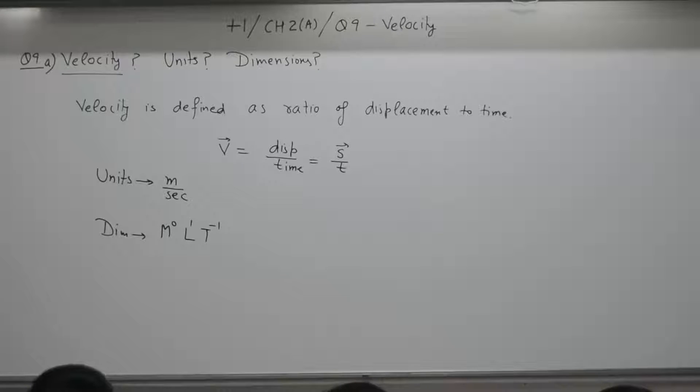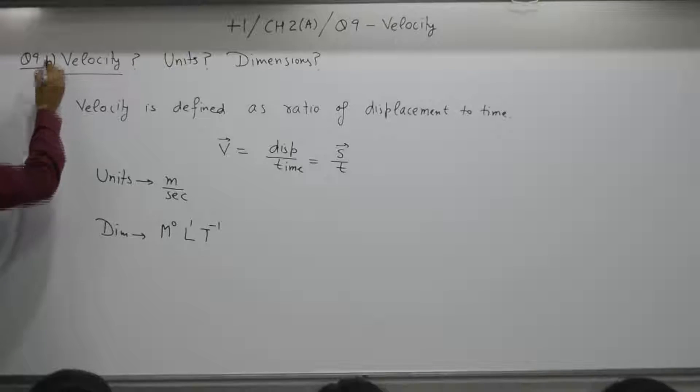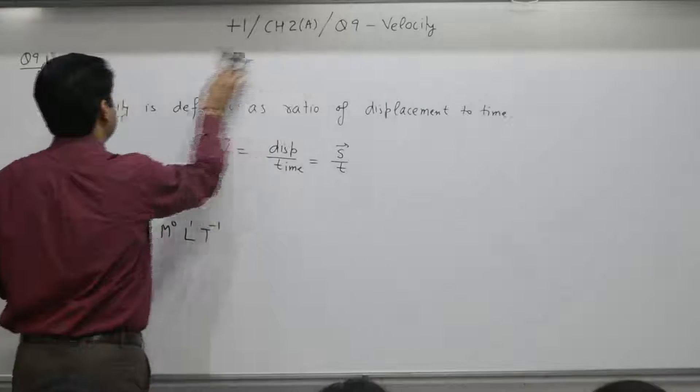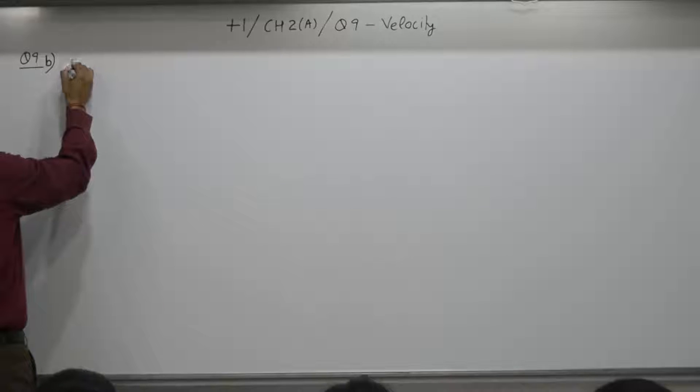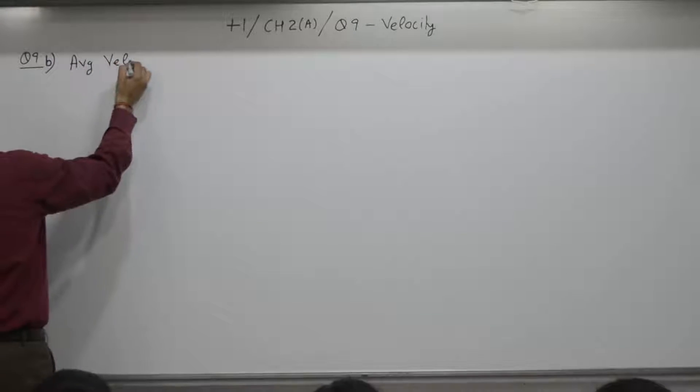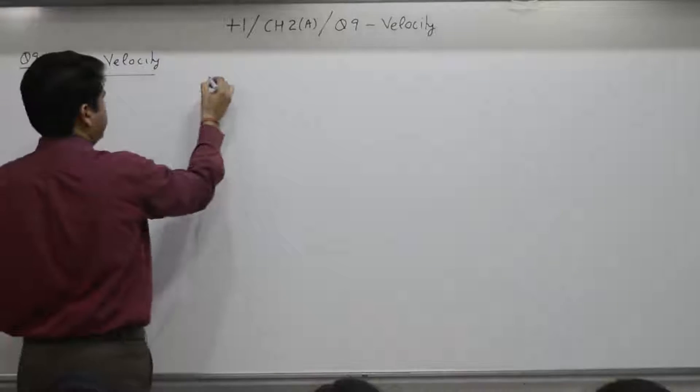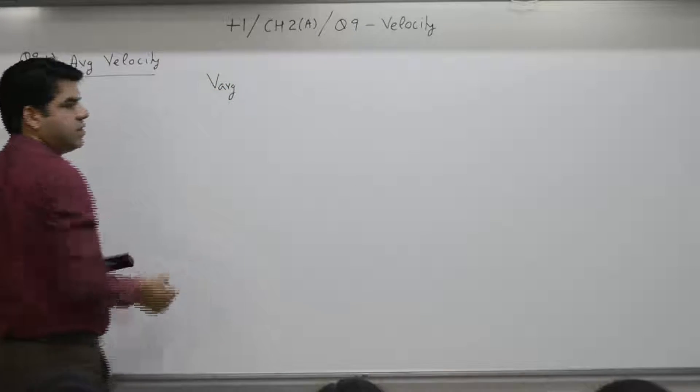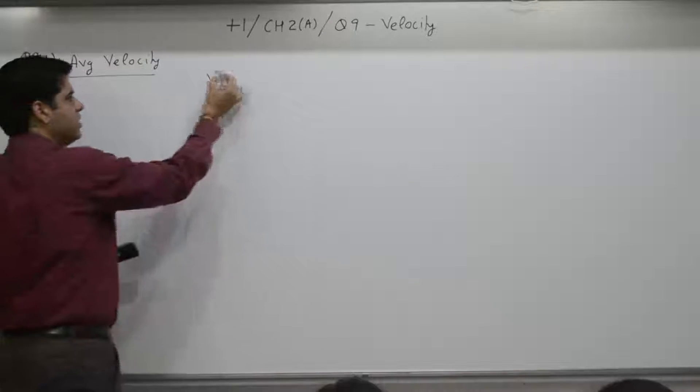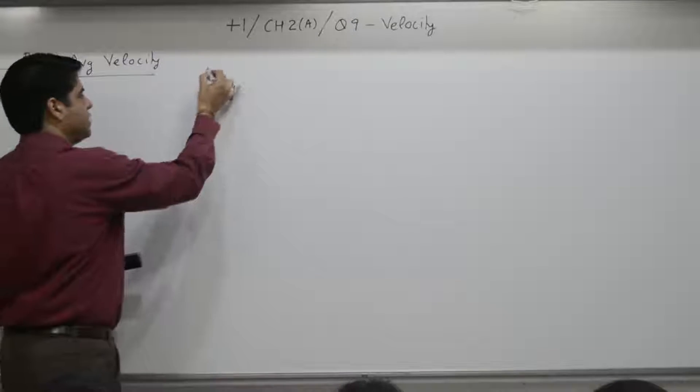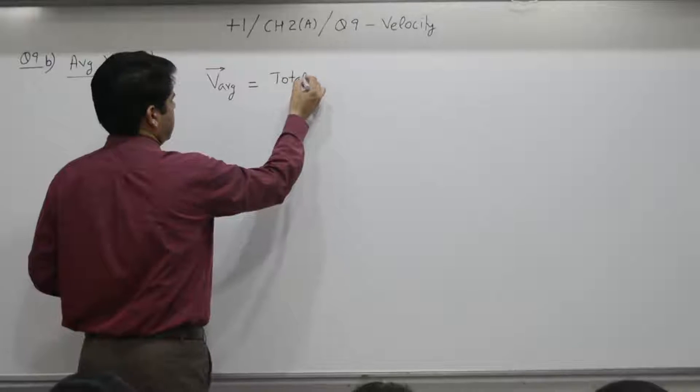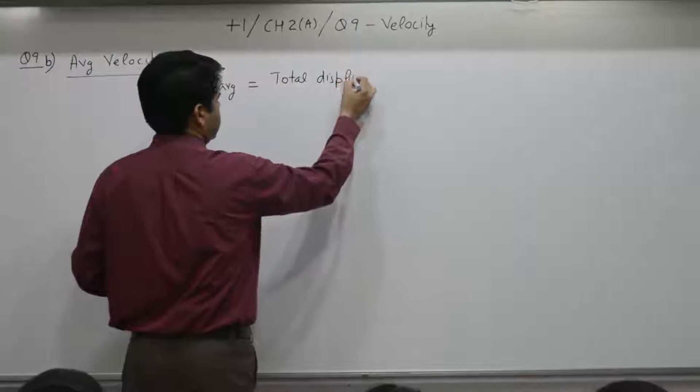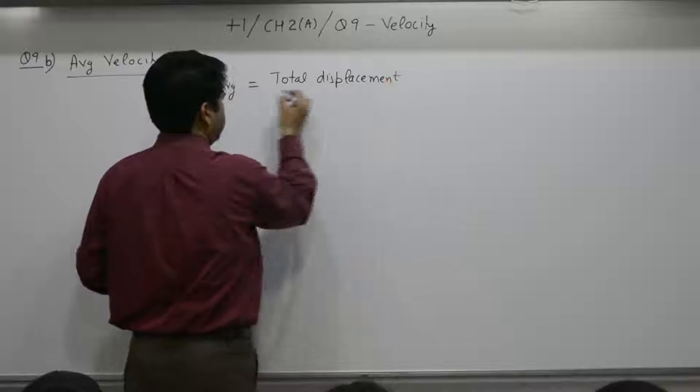V part. Average velocity. How you represent this? Average and in case you do not mark the arrow, it means average speed. If you mark the arrow, it means average velocity. It is equal to total displacement by total time.